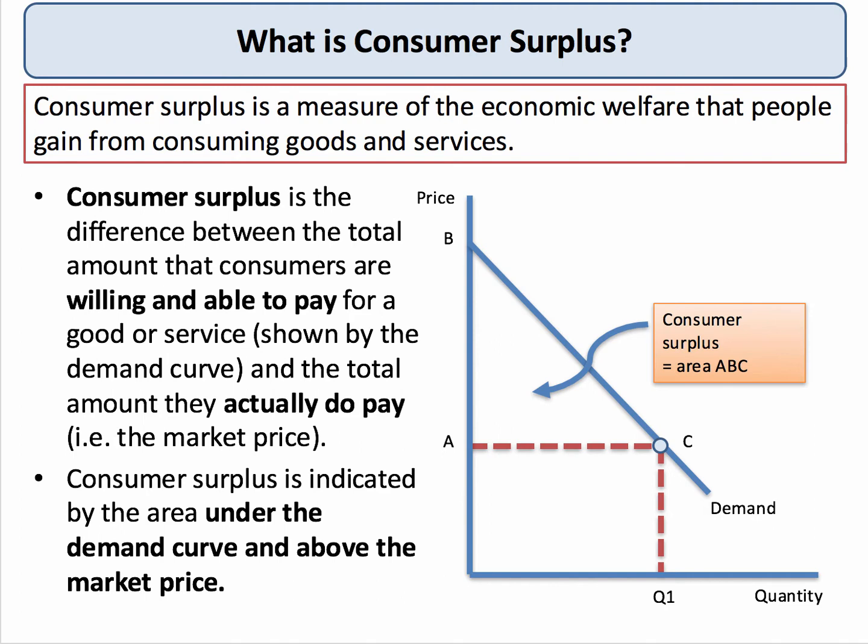Now, the area of consumer surplus is always shown by the area underneath the demand curve and above the market price. So in our diagram on the right-hand side here, consumer surplus is shown by the area A, B, C at an output of Q1.